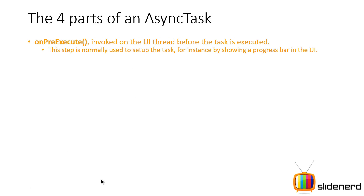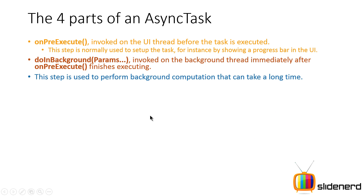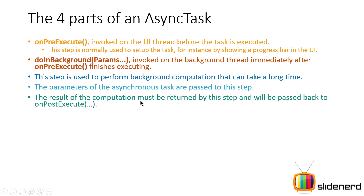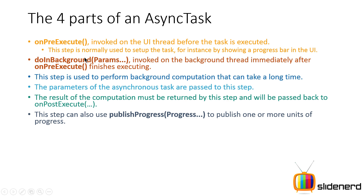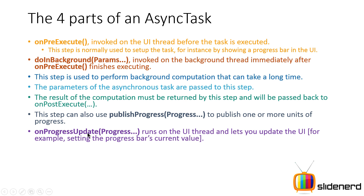Now, the four parts of an AsyncTask. onPreExecute runs on the main thread before the task is executed — this is where you set up and show the progress bar. In doInBackground, you perform your long-running operation. The URL to download an image is supplied here, and the result — a downloaded file or extracted text — is passed on to onPostExecute automatically.